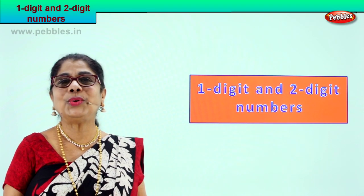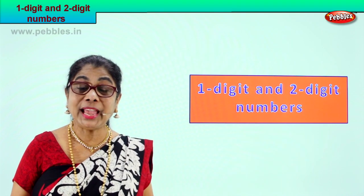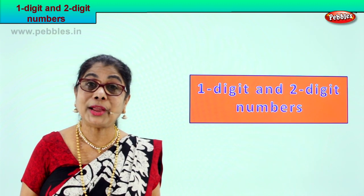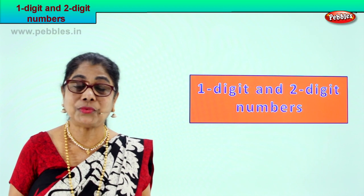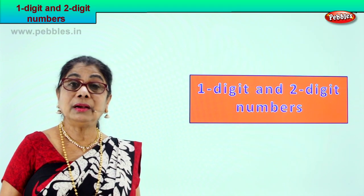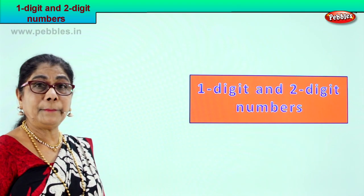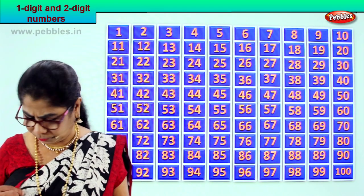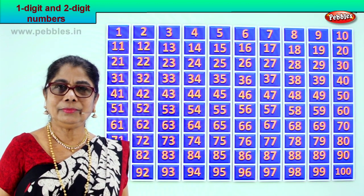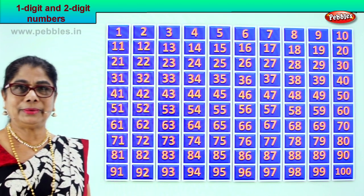Hi children, let's look at one-digit and two-digit numbers. We have learned lots of numbers. Now we are going to look at all the numbers we have learned so far and look at them one by one to see if they are one or two digit numbers. Shall we look at the numbers coming up? Here are all the numbers you have learnt — lots of numbers. One digit, two digit.